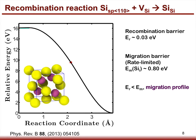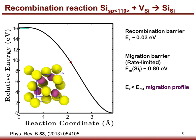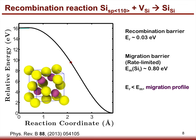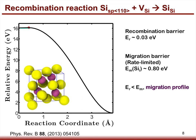Then let's look at the recombination between silicon interstitial and silicon vacancy. We find the recombination path proceeds as the silicon interstitial atom kicks out another silicon atom, which then recombines with the silicon vacancy. The barrier along this path is only 0.03 eV. Considering the silicon interstitial has a migration barrier of about 0.8 eV, the rate-limiting step is the silicon interstitial migration. Such an energy landscape is considered to have a migration profile.